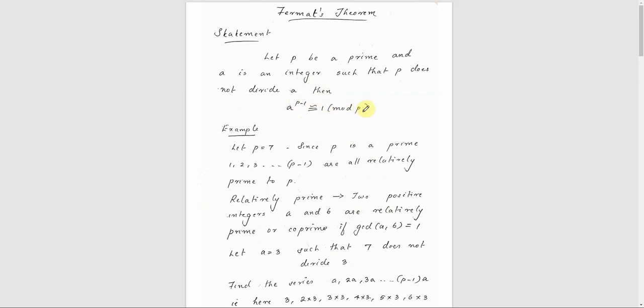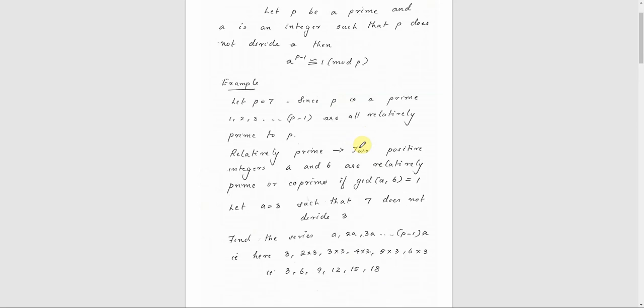In a proof-like form, we will see an example. Let P equal to 7. P is a prime number. P equal to 7, I am going to consider it.